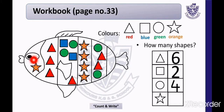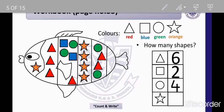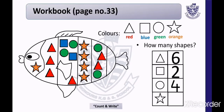The last shape is the star. Now we will count the stars. Count with me — 1, 2, 3, 4, and 5. There are 5 stars. Now we will write number 5 in the given block.